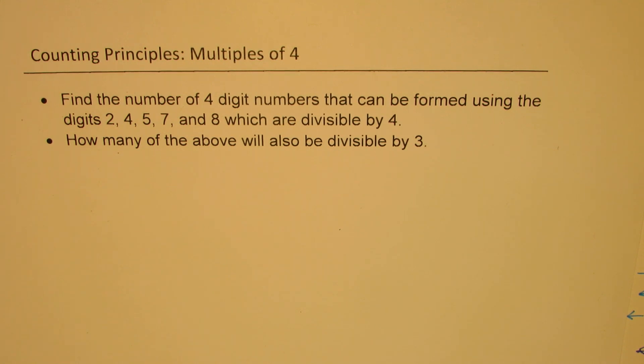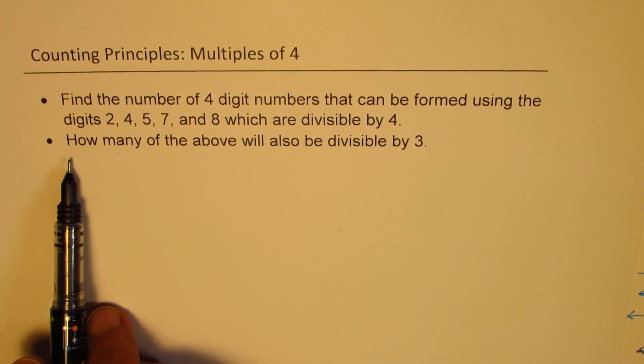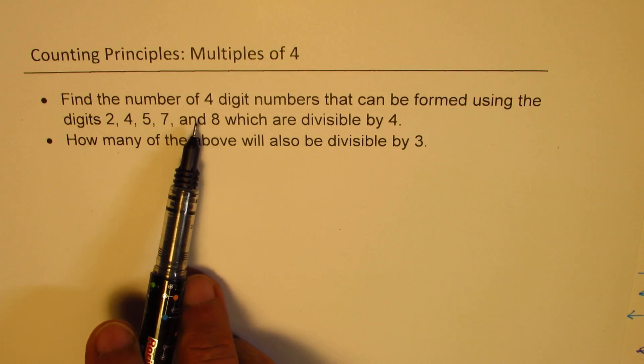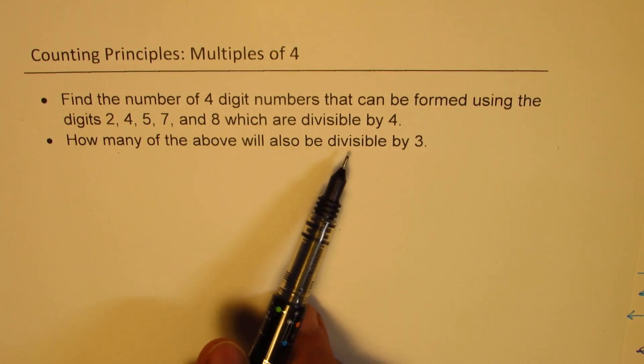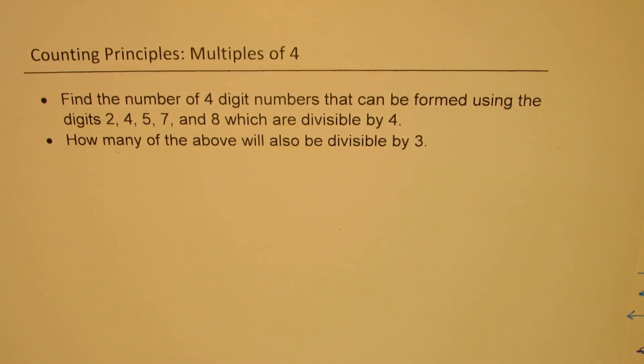The question here is, find the number of four-digit numbers that can be formed using digits 2, 4, 5, 7, and 8, which are divisible by 4. Part B of this question is, how many of the above will also be divisible by 3? You can always pause the video, answer the question, and then look into my suggestions.